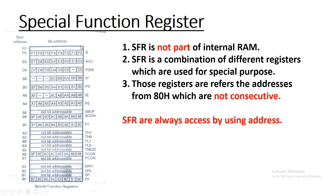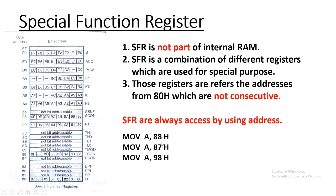SFR registers are always accessed by using their address. For example, P0 has SFR address 80H, P1 has SFR address 90H, P2 is A0H, and P3 is B0H. So by directly placing that address in your instructions, you can access the SFR register. For example, MOV A, 88H — here 88H is the TCON register and 87H is the PCON register, so the content of PCON is directly copied into the accumulator.